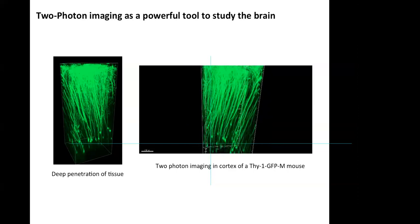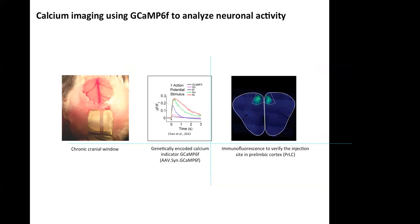To analyze neuronal activity, I perform a chronic cranial window and inject the genetically encoded calcium indicator GCaMP6F into the prelimbic area of the prefrontal cortex. I then cover the cranial window with a cover glass built up with dental cement, and attach a specific metal bar for head-fixing the mouse during imaging sessions.